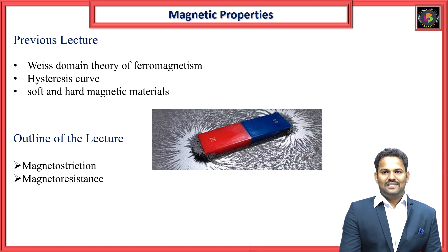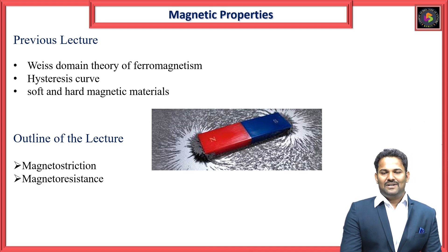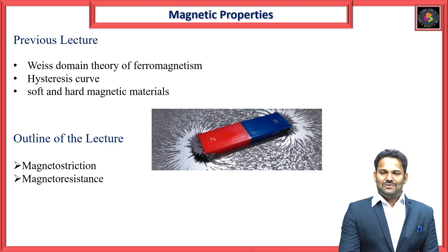Hard and soft magnetic material differences are completely dependent upon the coercivity of the magnetic materials. Hysteresis is the lagging behind of the magnetization — when we apply a magnetic field, the magnetization value lags behind. After removal of the magnetic field, the material still shows some magnetization value, known as retentivity. Coercivity values were also discussed in our previous lecture. In domain theory, each ferromagnetic material has individual domains, and domain orientations were also discussed in the last class.